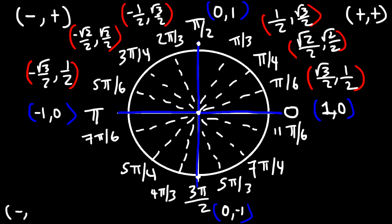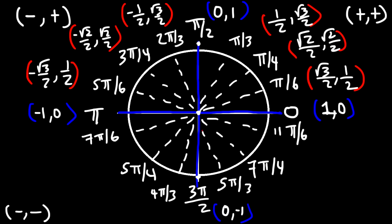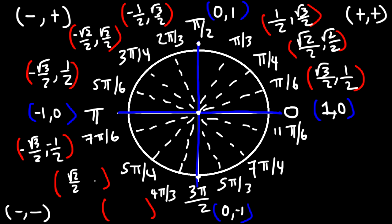In Quadrant 3, both x and y are negative. The angles that share values with π/6 — such as 7π/6 — will have the same magnitude as π/6, but both x and y are negative. Similarly, 5π/4 has the same values as π/4, but x and y are both negative. And 4π/3 is going to be similar to π/3, but everything is negative.